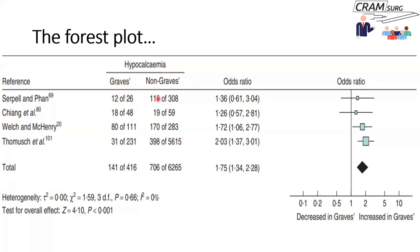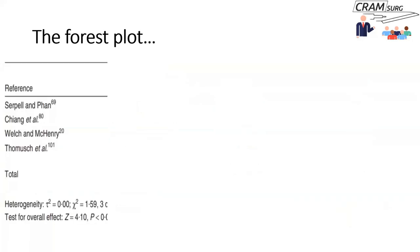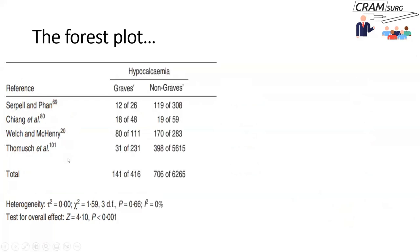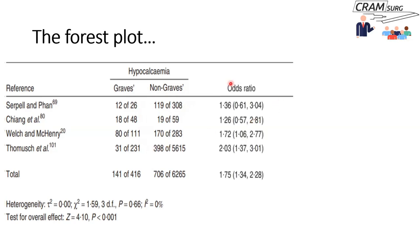Here's an example of a forest plot — this is what one usually looks like. In this particular forest plot you've got four different studies, and we're looking at hypocalcemia rate after total thyroidectomy in patients with Graves disease compared with patients without Graves disease. The studies are listed on the left-hand side, usually in chronological order of publication.